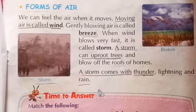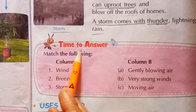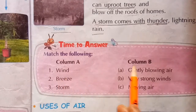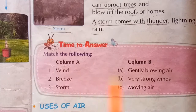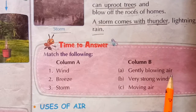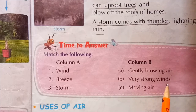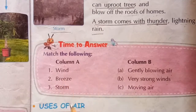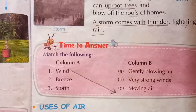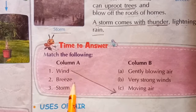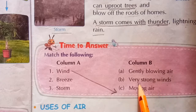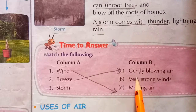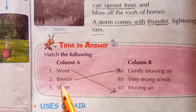Now students, time to answer — match the following. Column A and Column B. Wind: moving air is called wind. Breeze: gently blowing air is called breeze. Storm: very strong winds.